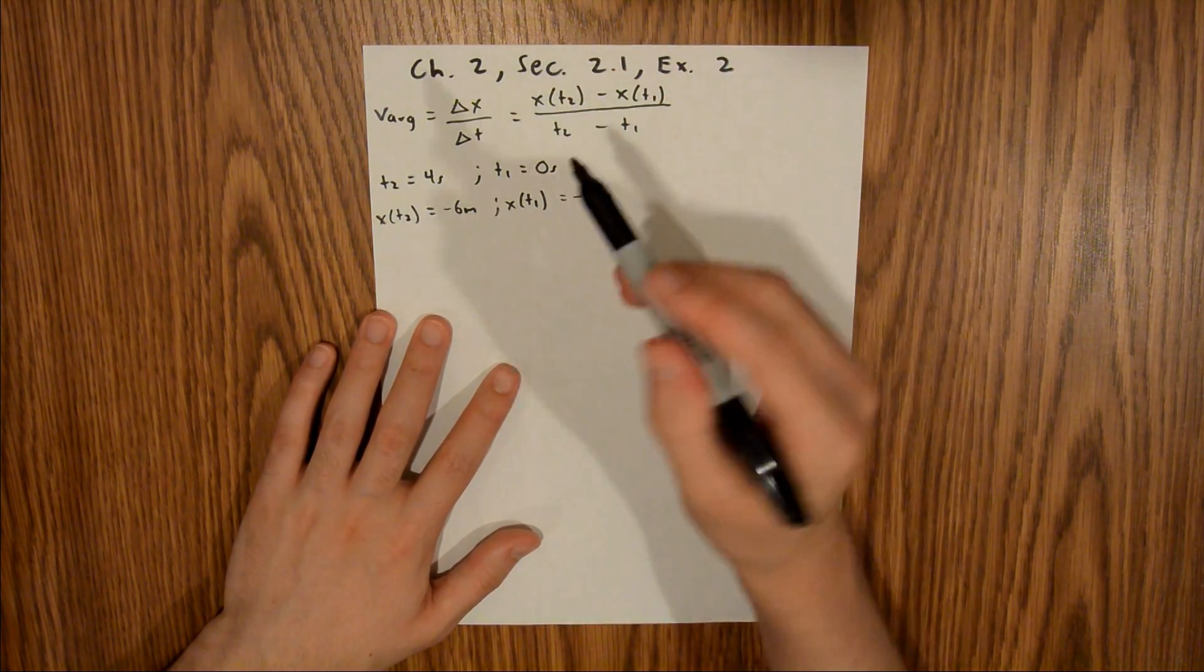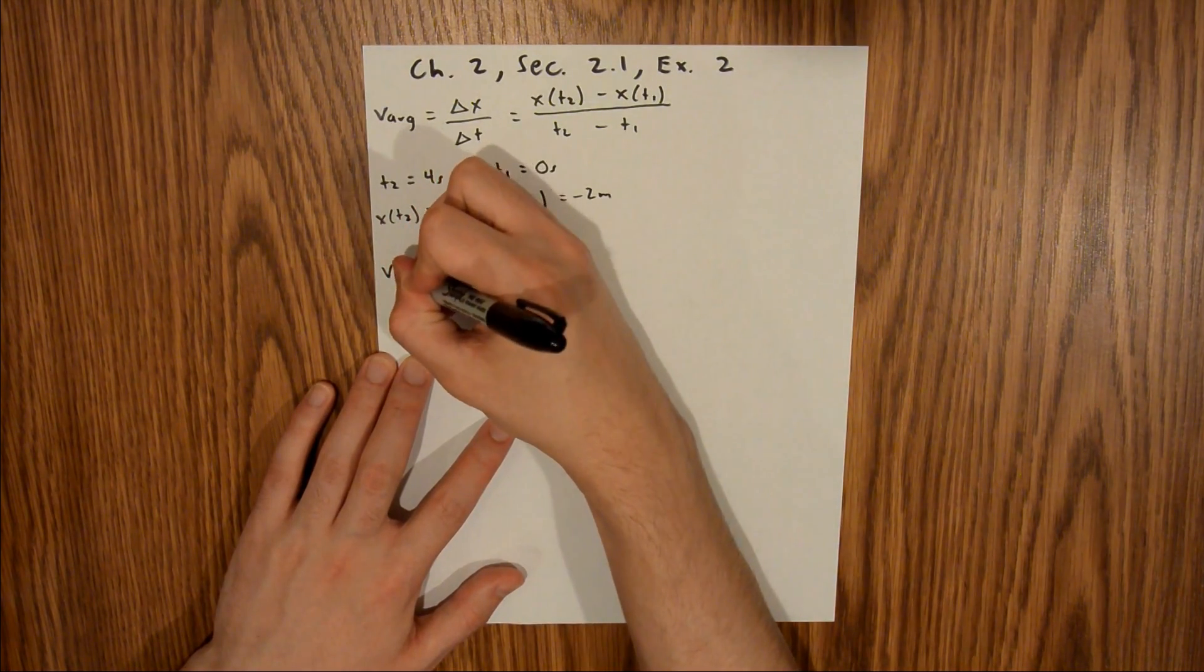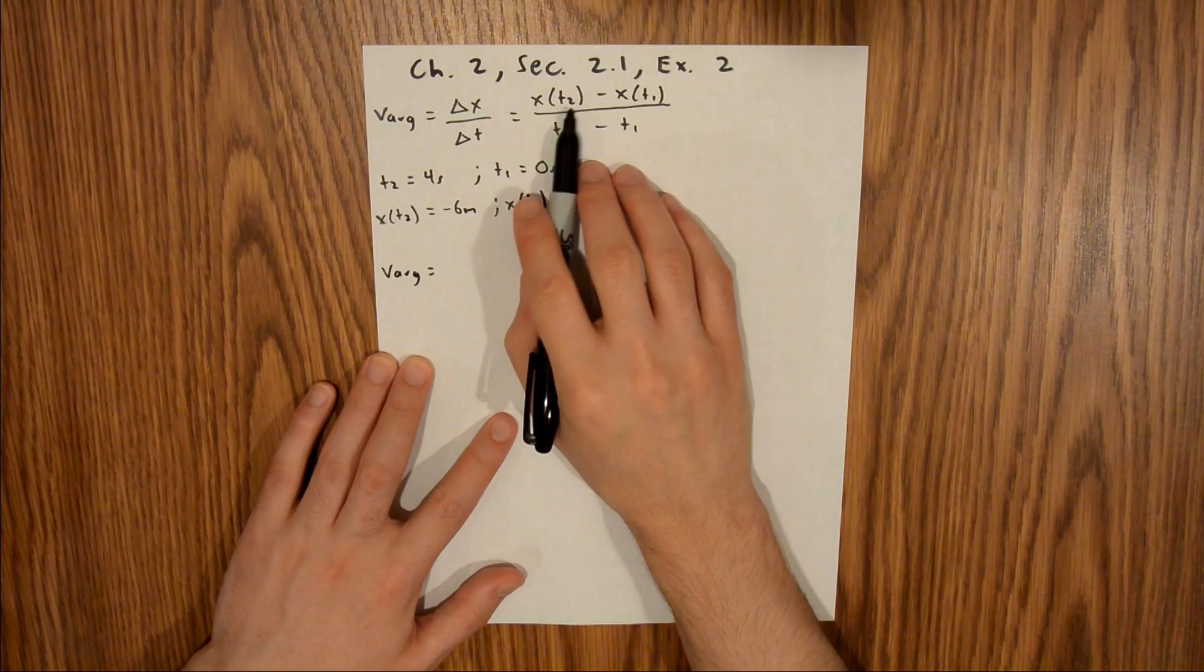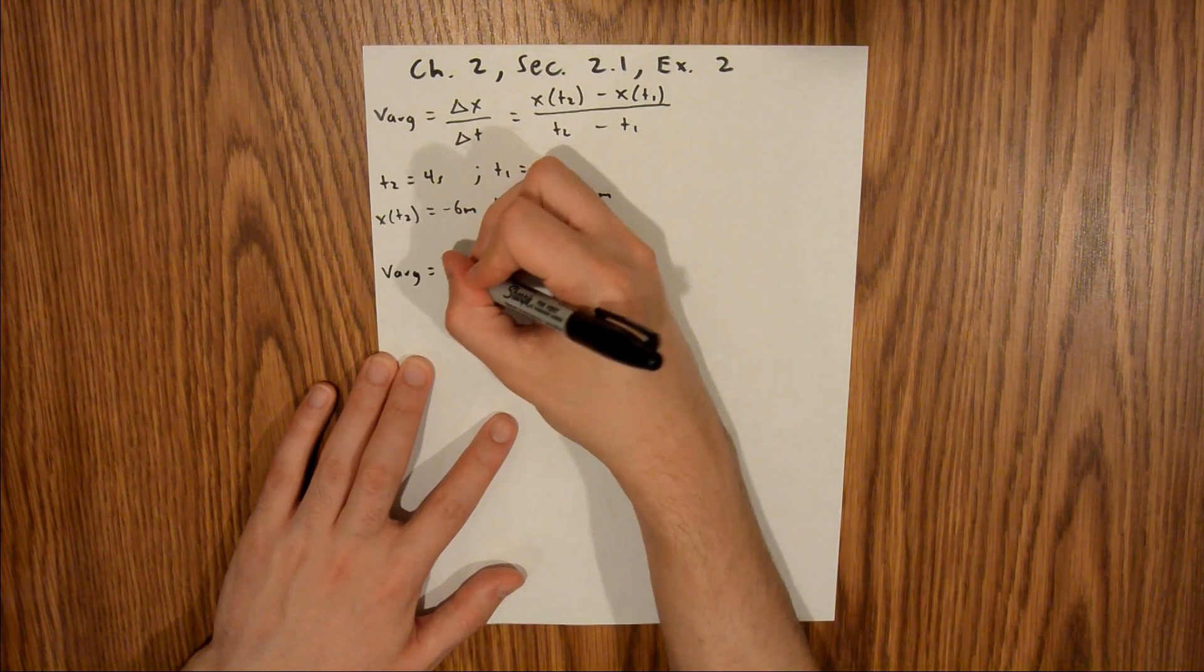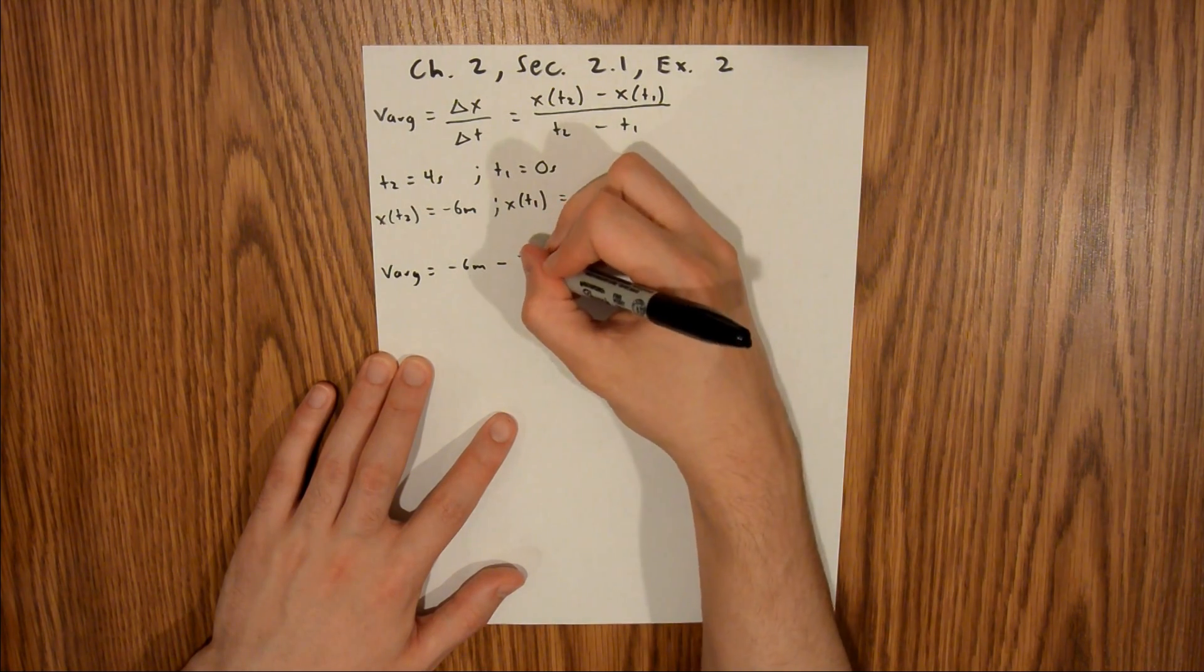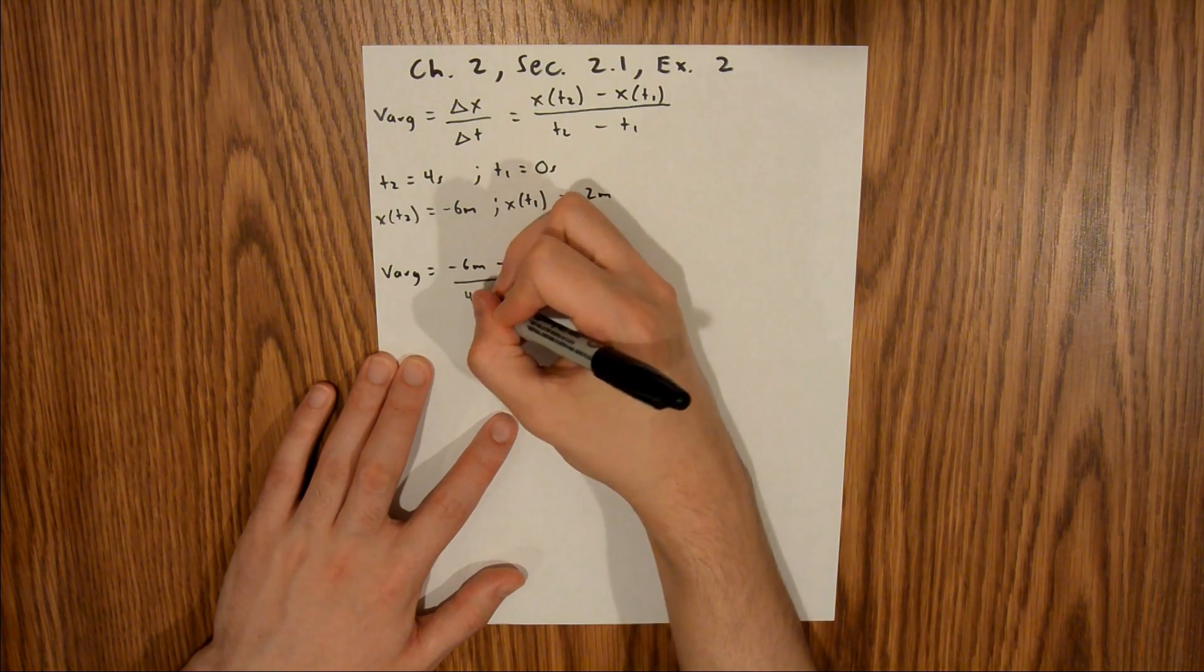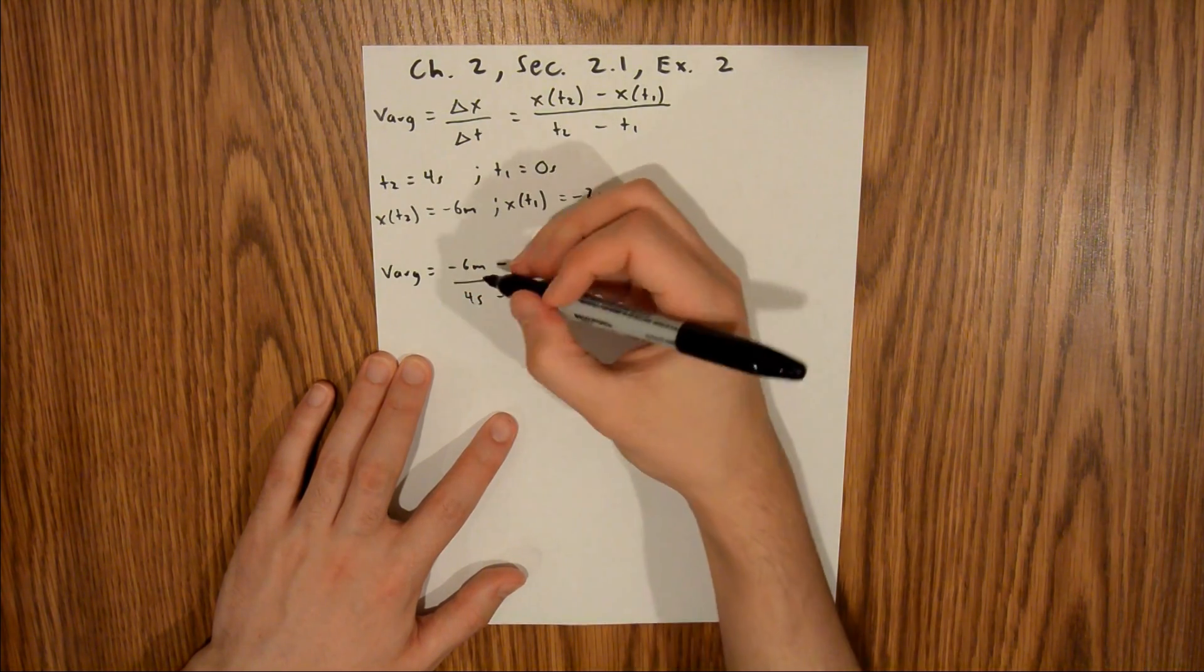Those are the four variables we need to plug in. The average velocity equals x of t2, which is negative 6 meters, minus x of t1, which is negative 2 meters, divided by time 2, which is 4 seconds, minus time 1, which is 0 seconds.